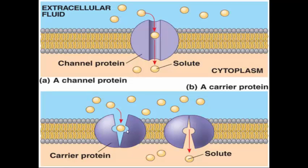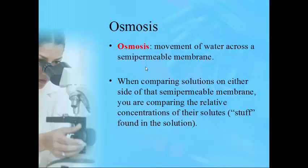Channel proteins integrated in the membrane act as pathways for large compounds to pass through. Here's how that looks: these particles are too big to squeeze through the cell membrane, so they use channel proteins to get in and out. Osmosis is the last type of passive transport — it's the movement of water across a semipermeable membrane. For diffusion, movement is random; for facilitated diffusion, proteins help; for osmosis, water moves across the cell membrane.